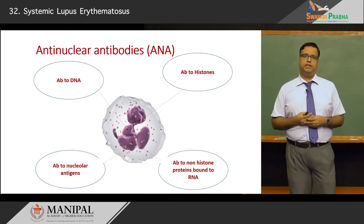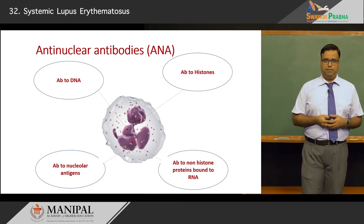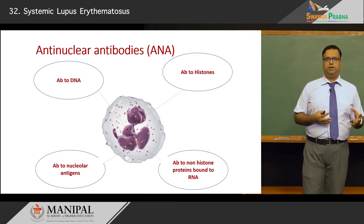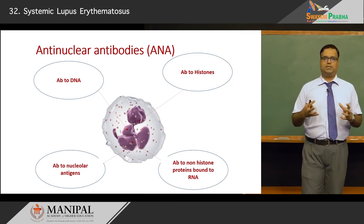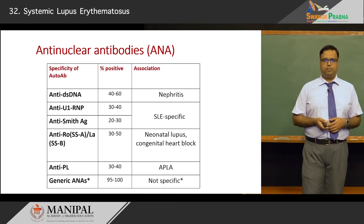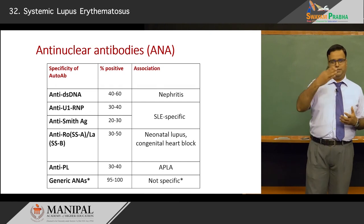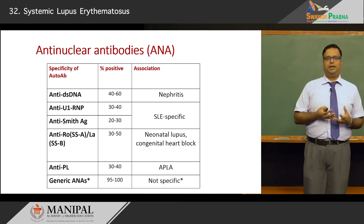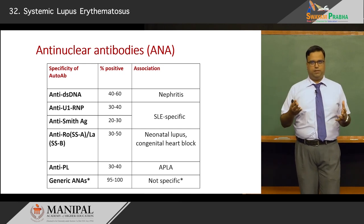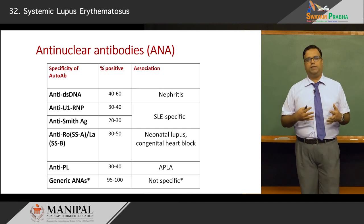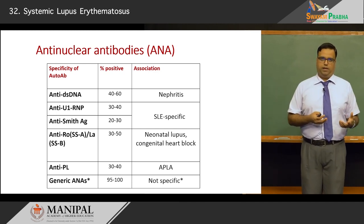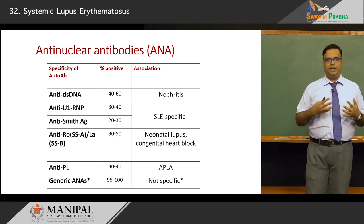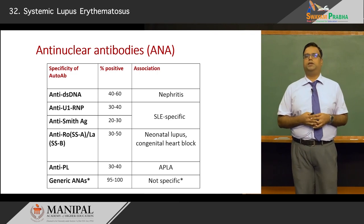As seen on screen, antibodies can bind to double-stranded DNA, histones, non-histone molecules bound to RNA, or nucleolar antigens. Anti-double-stranded DNA positivity in SLE ranges from 40 to 60 percent and is prototype for lupus nephritis. Anti-U1 ribonucleoprotein and anti-Smith antigen are SLE-specific, with anti-SM seen in around 20 to 30 percent of cases.